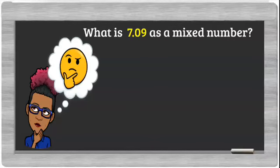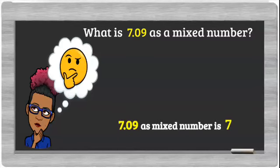Another example: what is 7.09 as a mixed number? So again, 7 before the decimal point is a whole. Here we have 0, 9, two places after the point. So we can safely say 7.09 as a mixed number is 7 and 9 hundredths.